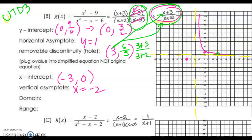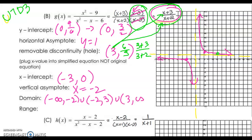You can plot more points if you'd like, but I already know my graph has to be approaching the asymptotes. The domain is going to be all real numbers except the vertical asymptote. We also aren't going to have a point at x equals 3 because we've got a hole there. So the domain is from negative infinity up to the vertical asymptote at negative 2, union with negative 2 up to the x-coordinate of the hole at 3, and union with 3 to infinity.